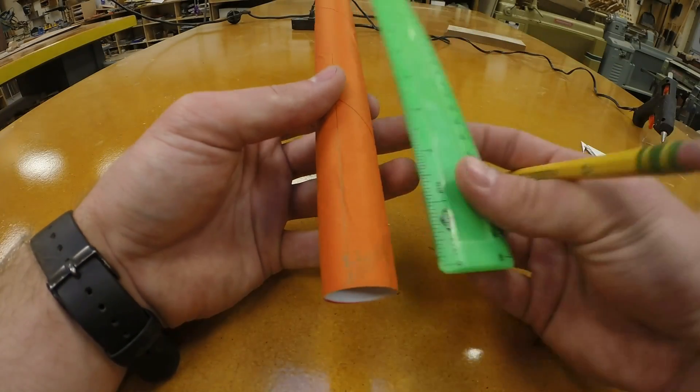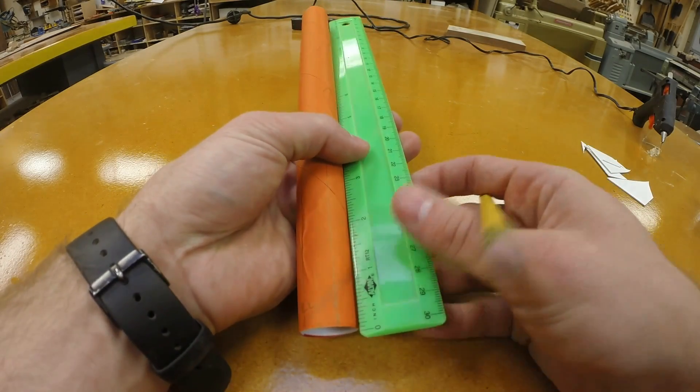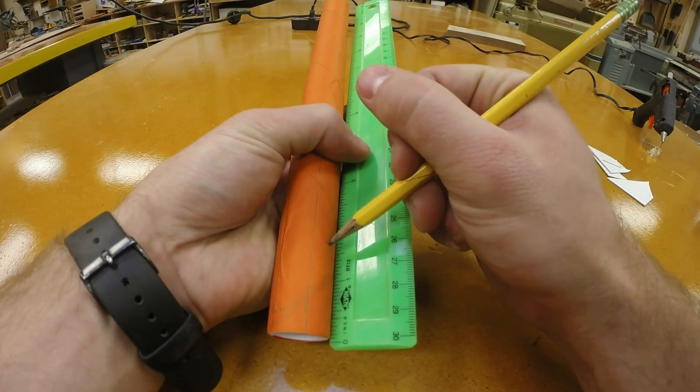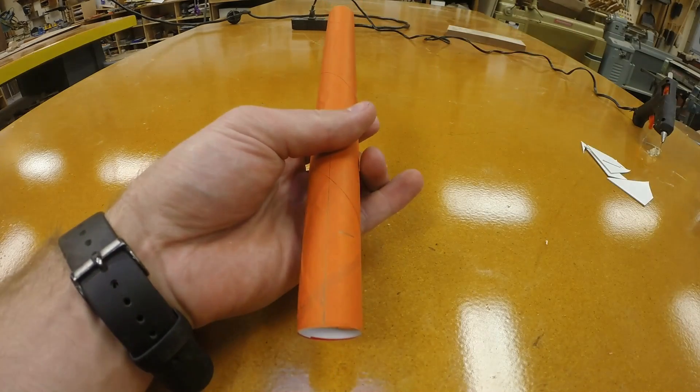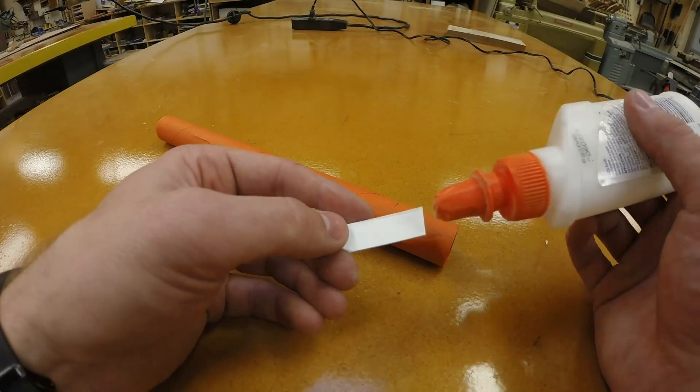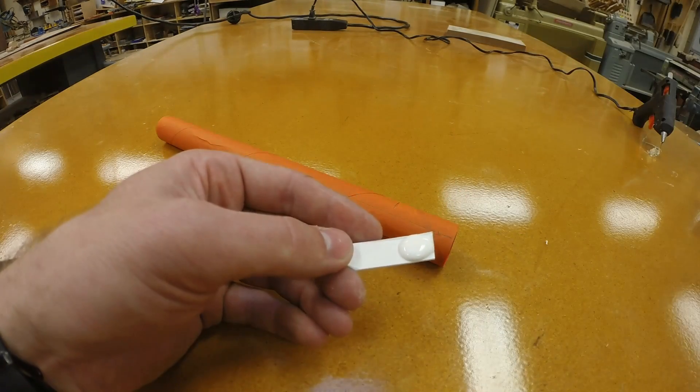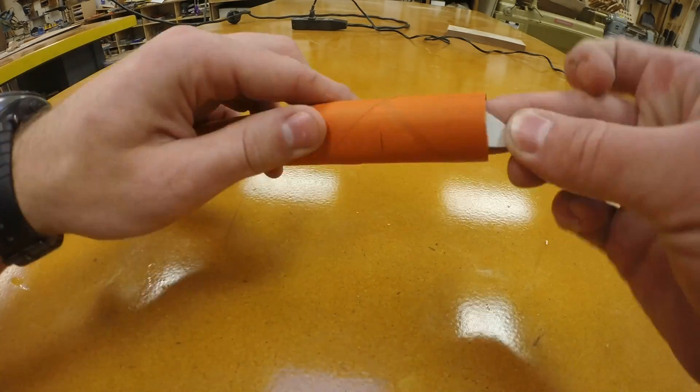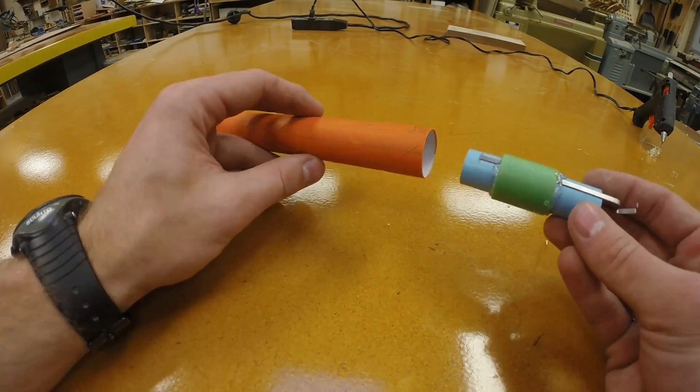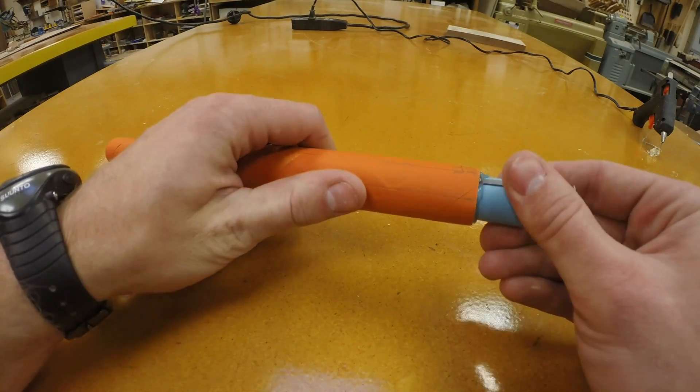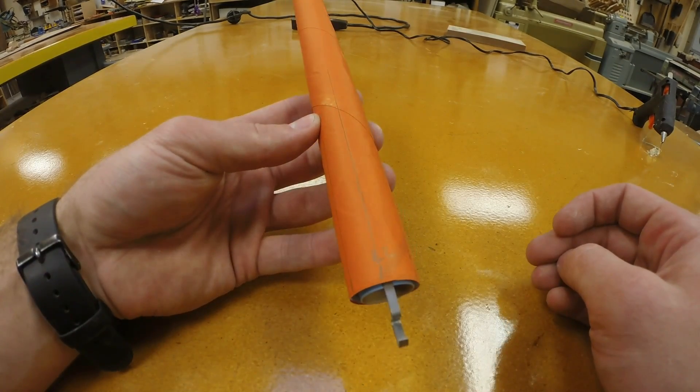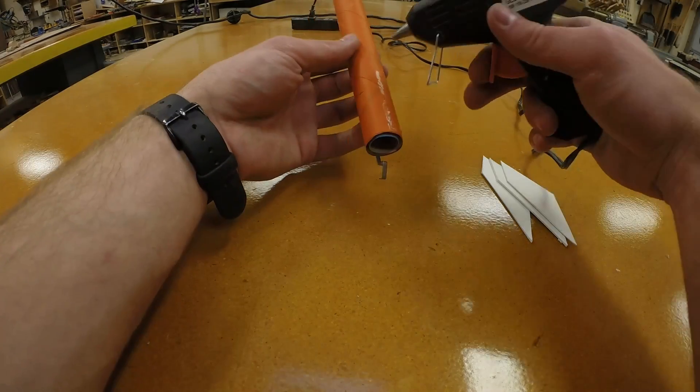Next, you're going to use a ruler and from the end of the tube where you just marked for the fins and the launch lug measure up an inch and a half and make a little mark. Use a scrap piece of fin material to smear some white Elmer's glue right at that inch and a half mark you just made. Then you can slide the engine mount assembly all the way in until the blue tube is even with the orange tube.